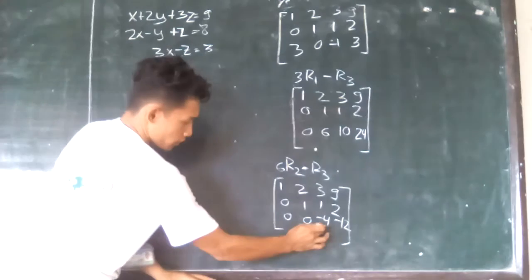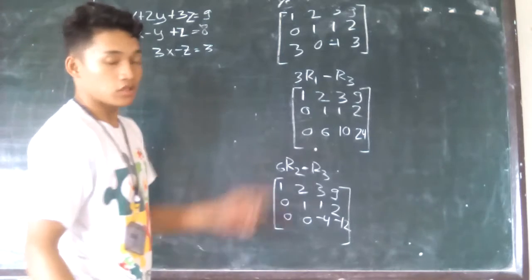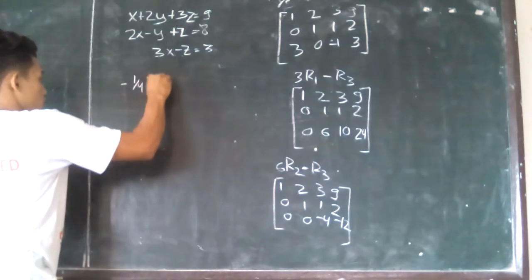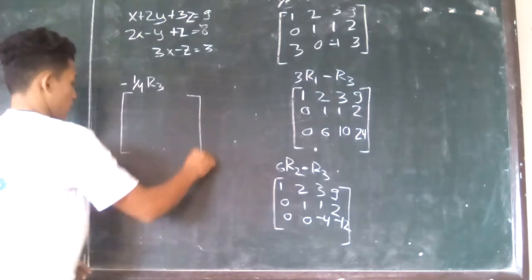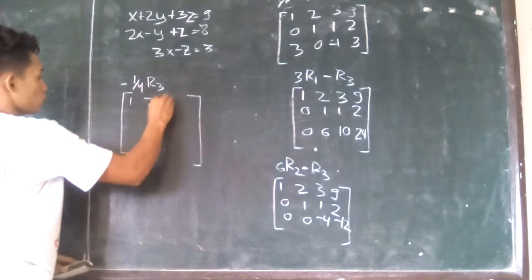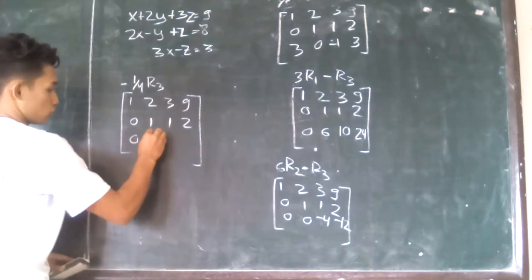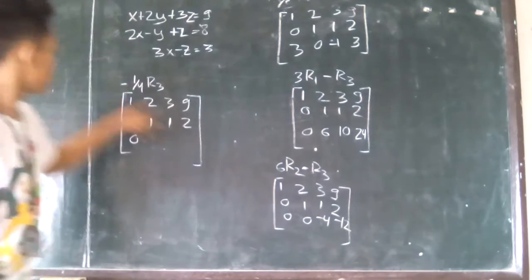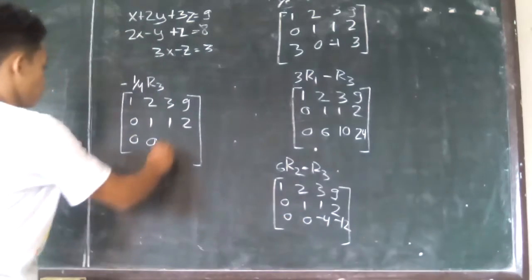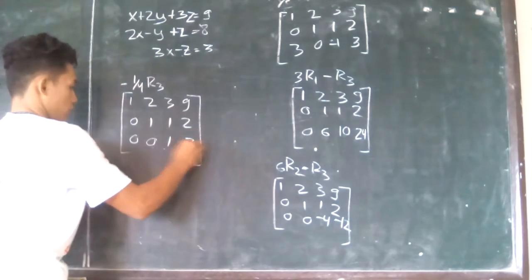The last step is to make this pivot 1. By multiplying by the reciprocal of negative 4, which is negative 1 over 4. So negative 1 over 4 times 0 is 0. Negative 1 over 4 times 0 is 0. Negative 1 over 4 times negative 4 is 1. Negative 1 over 4 times negative 12 is 3.